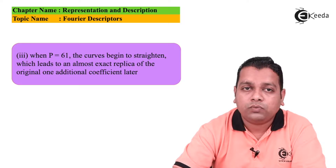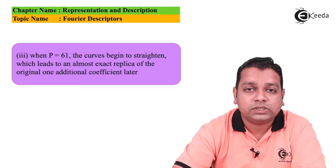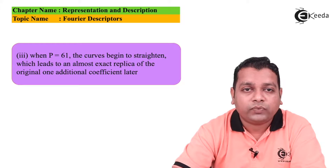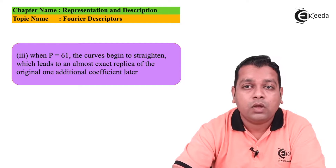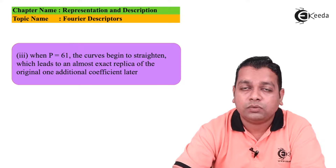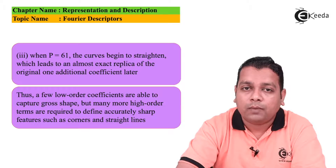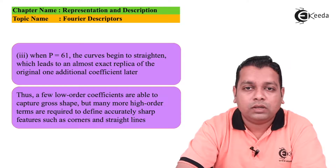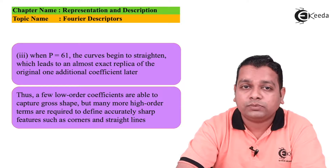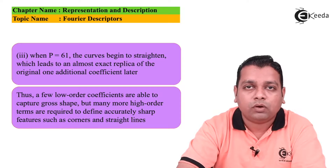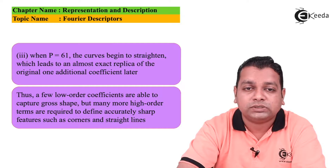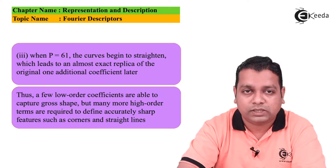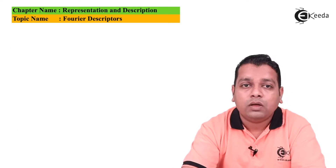Third, when P = 61 the curves begin to straighten, which leads to an almost exact replica of the original with one additional coefficient. Thus, a few lower-order coefficients are able to recapture the gross shape of the original boundary, but many more higher-order terms are required to accurately determine sharp features such as corners and straight lines.